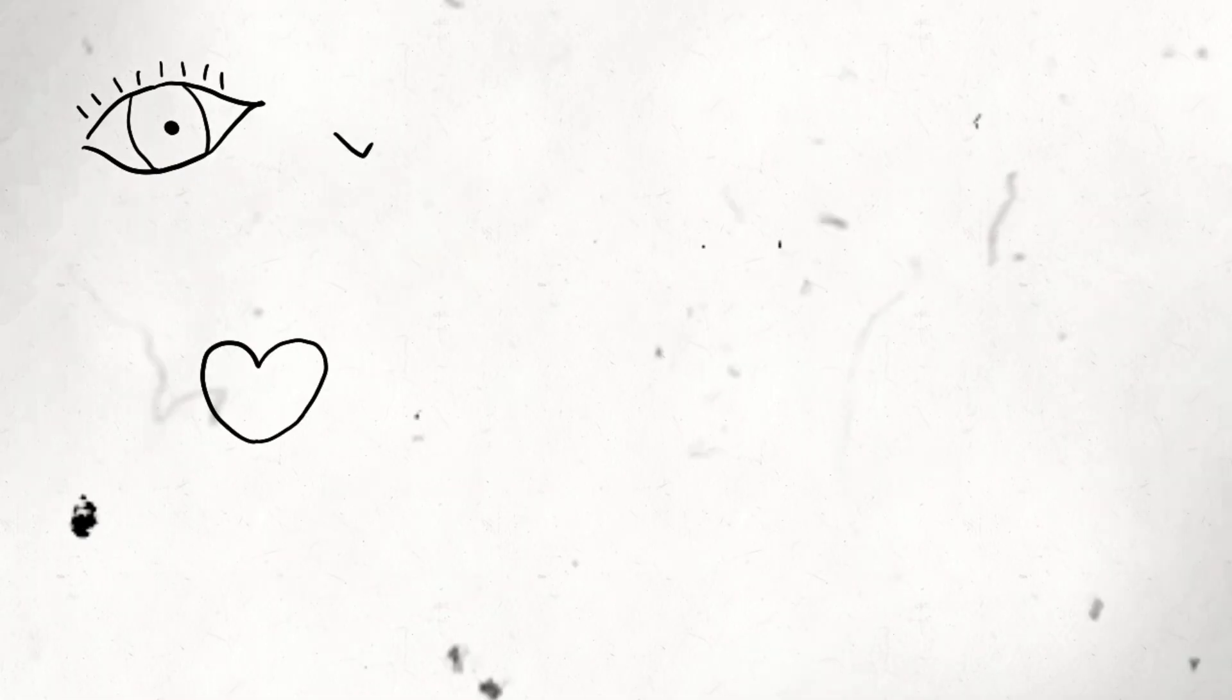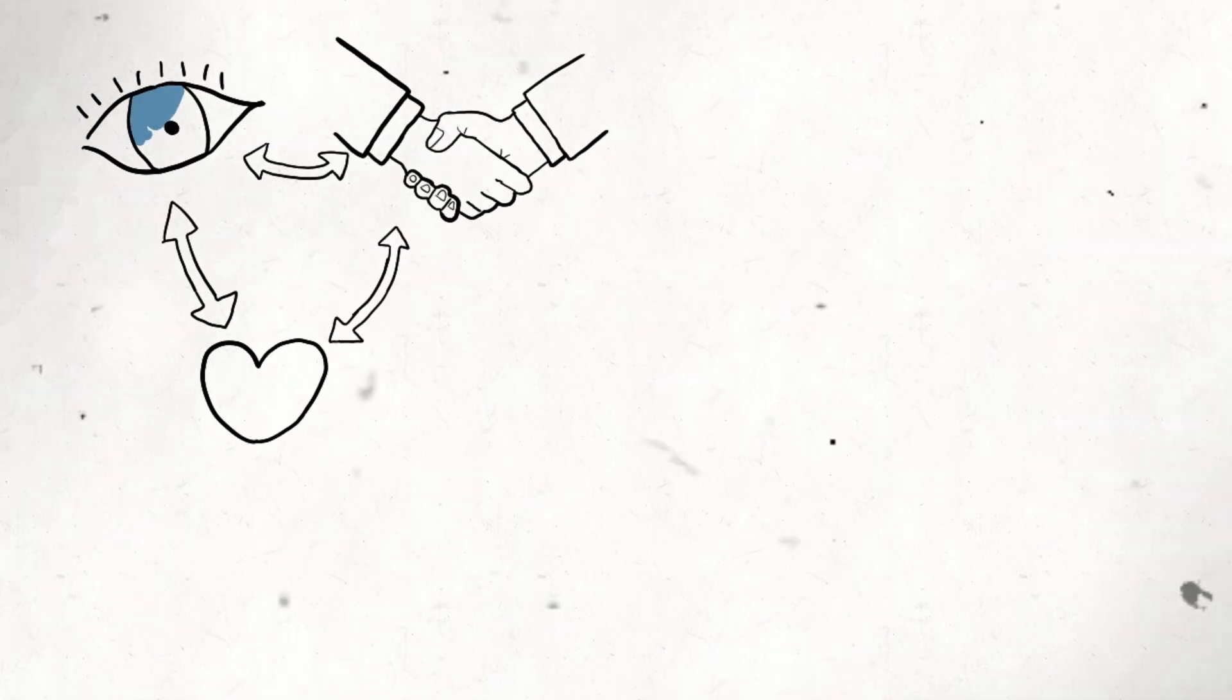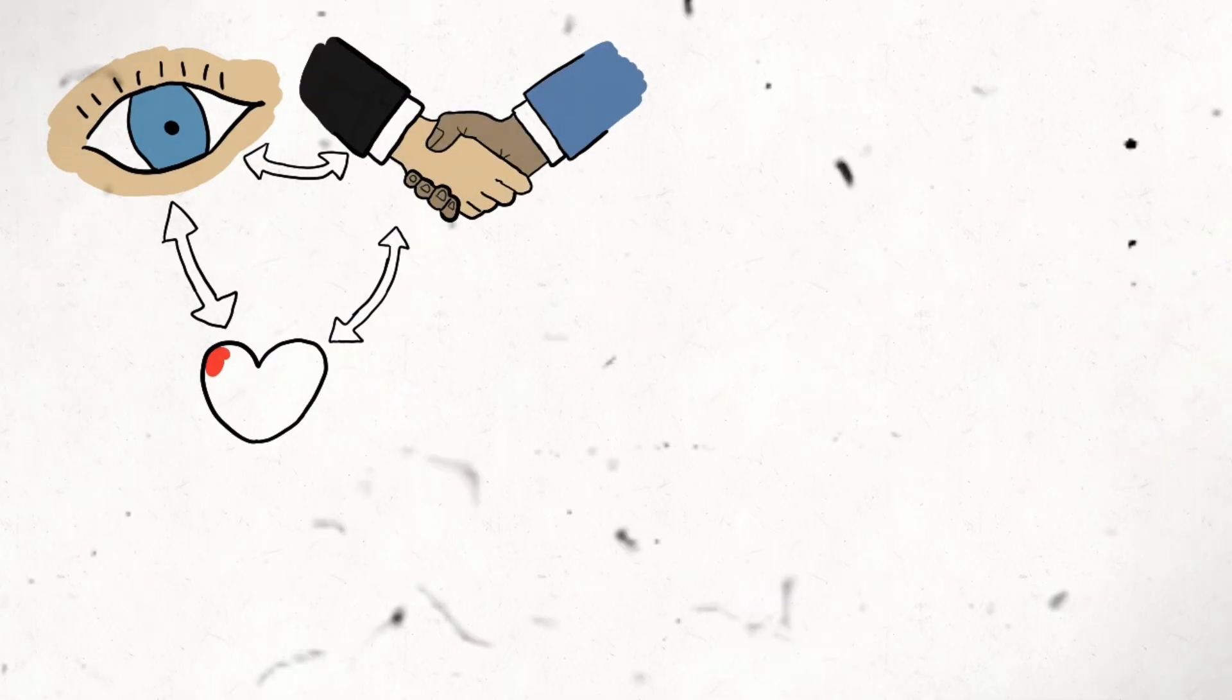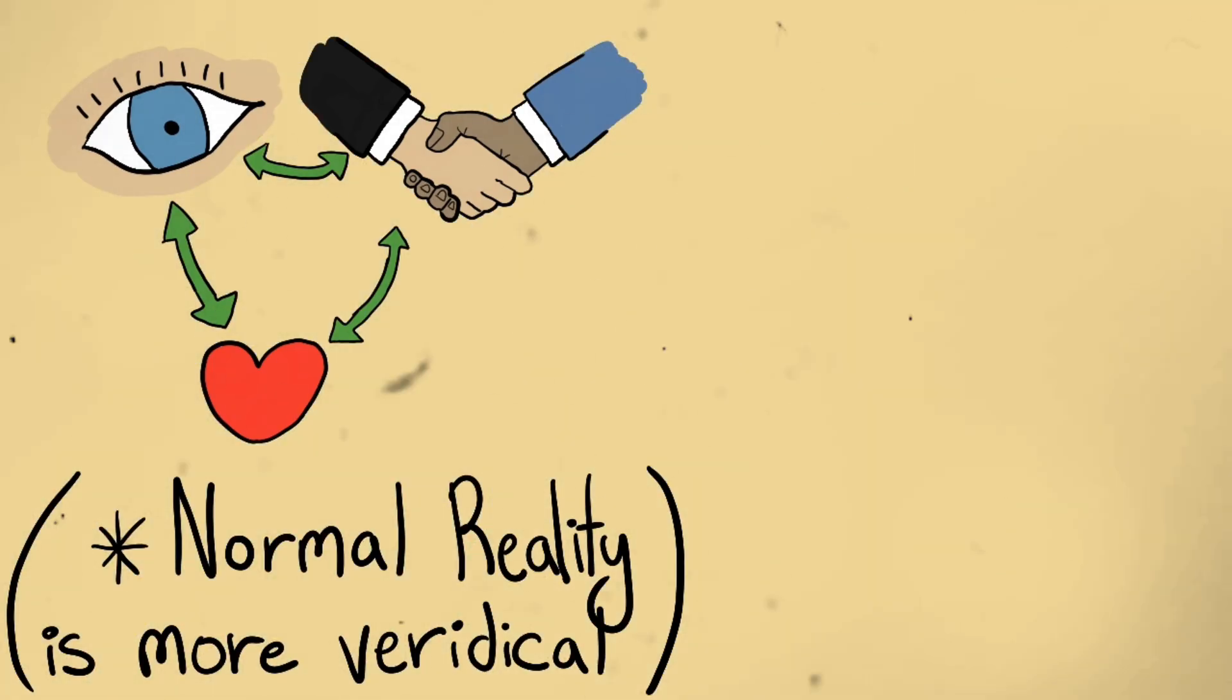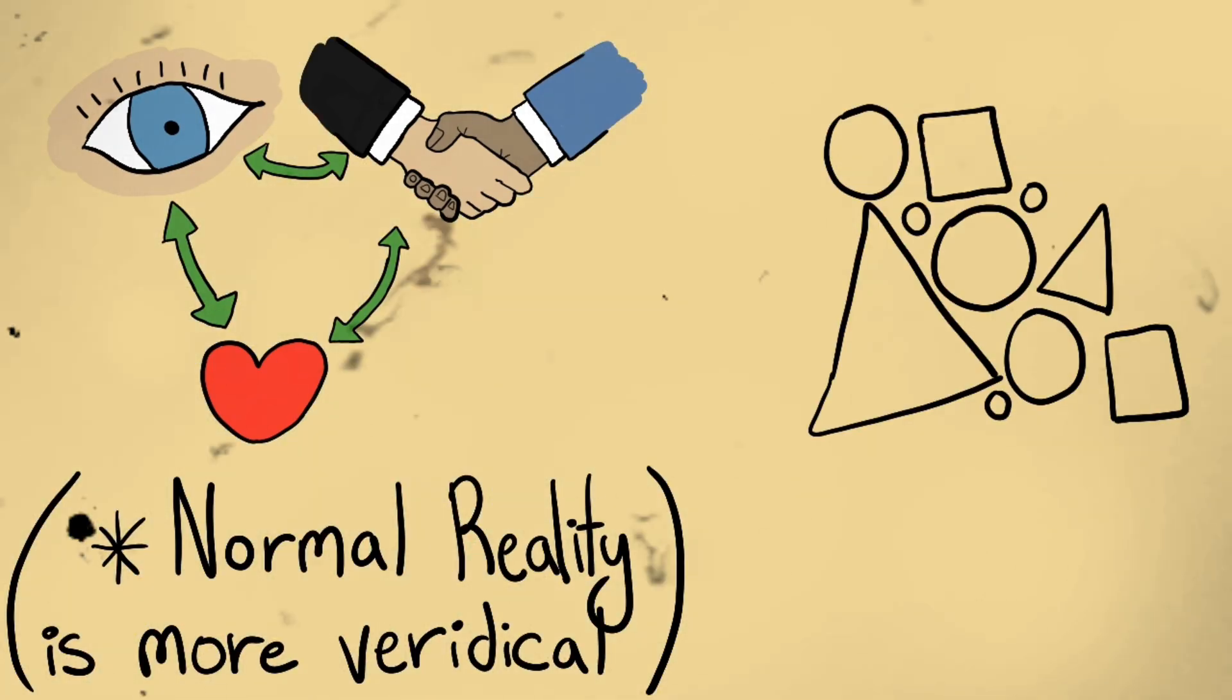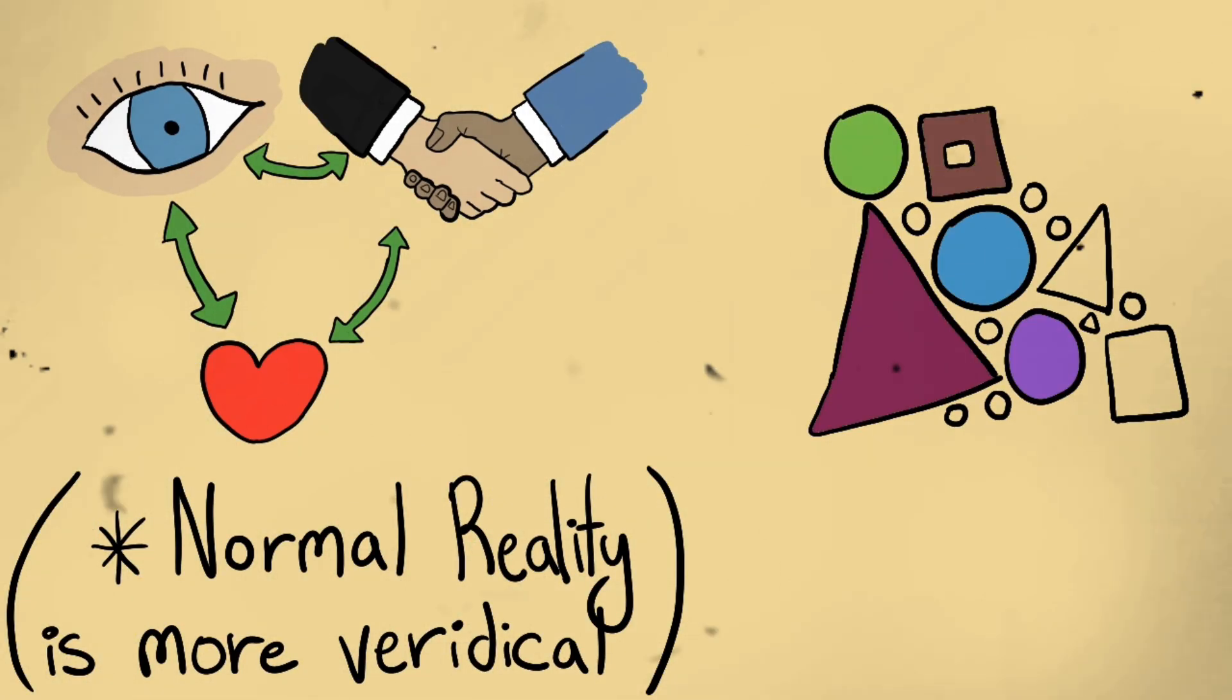McGilchrist is emphasizing that our attention, disposition, and relation towards the world and others around us is what constitutes our reality. And a normal reality is not necessarily more true than the reality experienced by someone with mental illness, whatever the relationship between schizophrenia and autism ends up being.